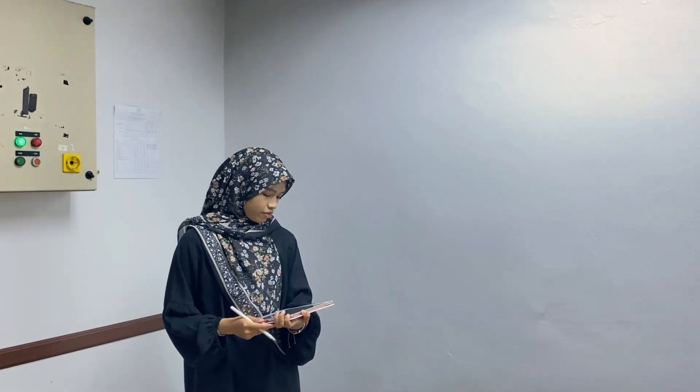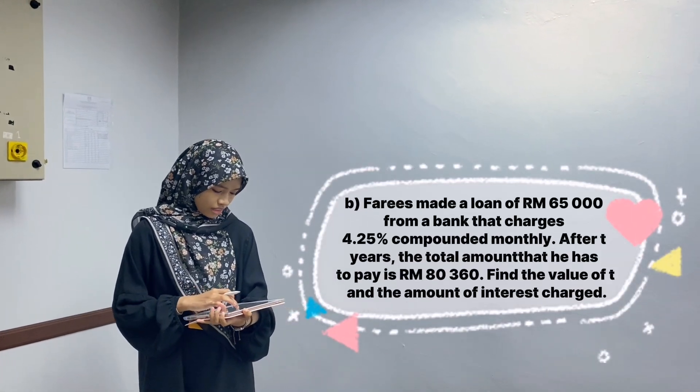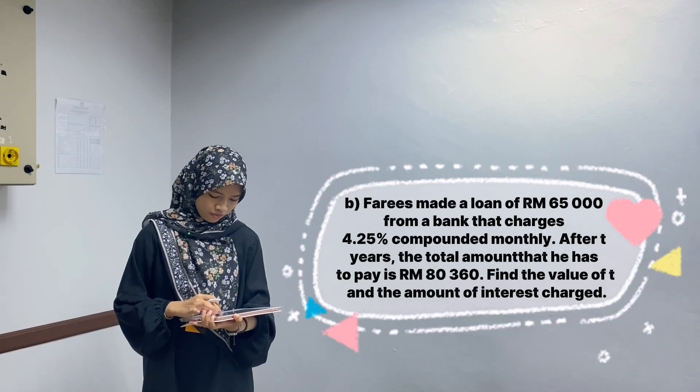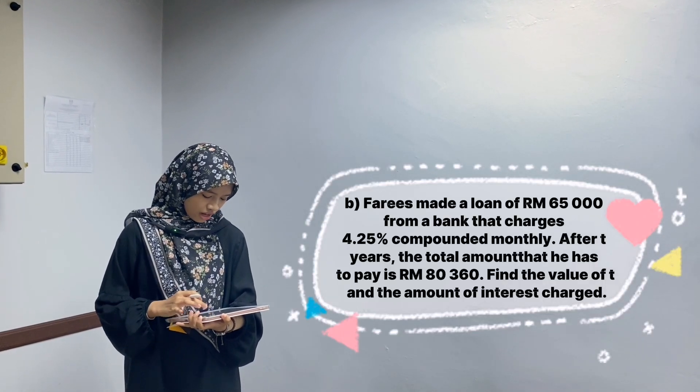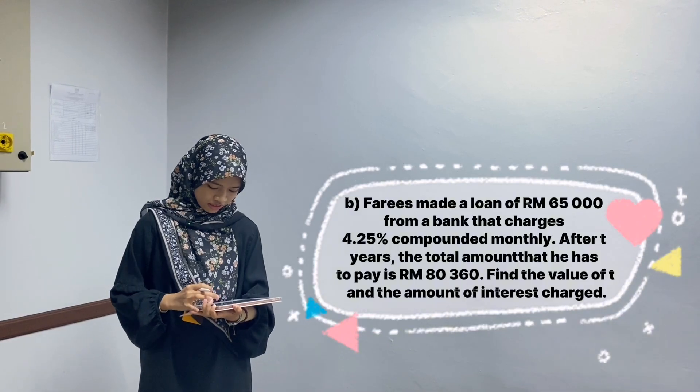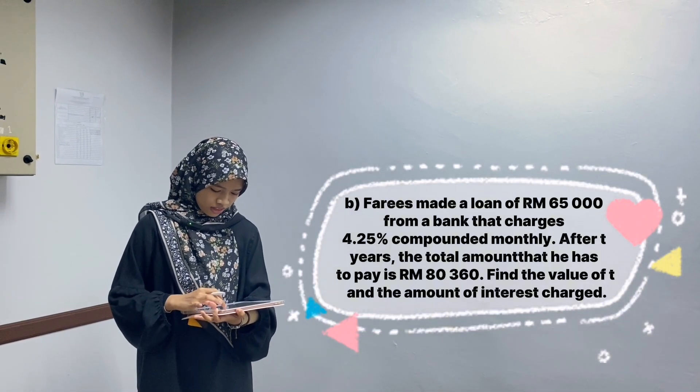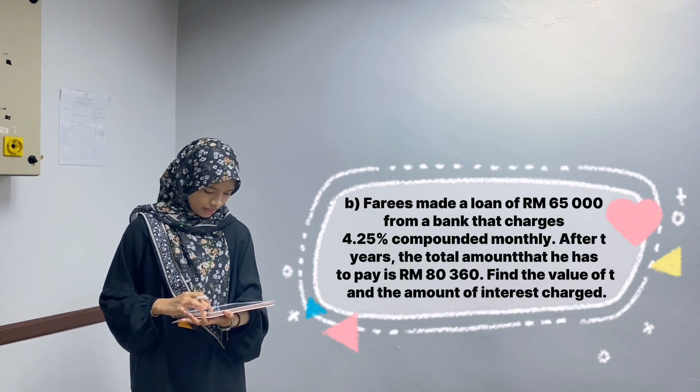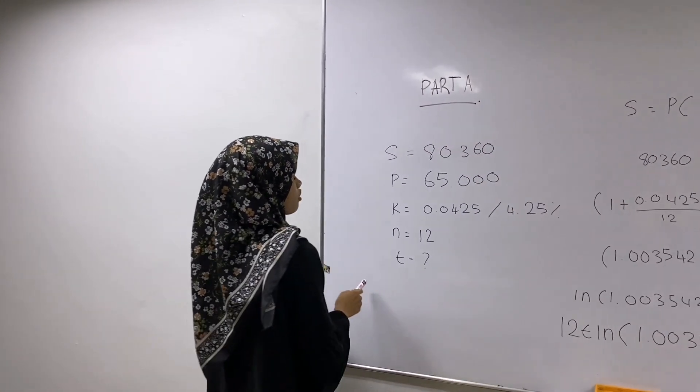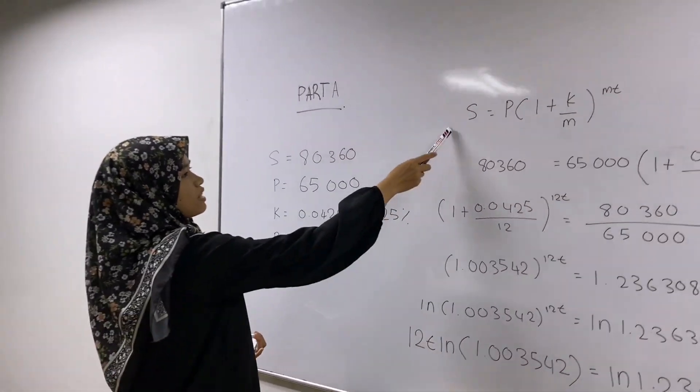Next, Part B for question 2 Part A. Faris made a loan for RM65,000 from a bank that ensures 4.25% compounded monthly. After 3 years, the total amount that he has to pay is RM18,316. Find the value of T and the amount of interest. So for part A question 2B, this is the info from the question and this is the formula.